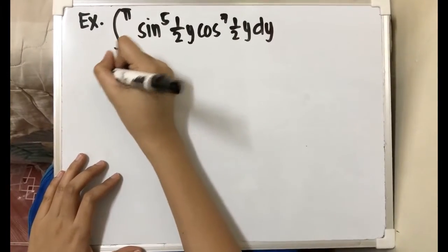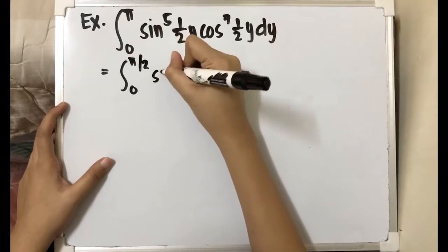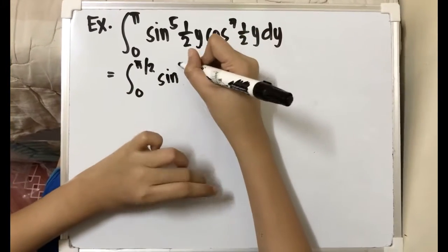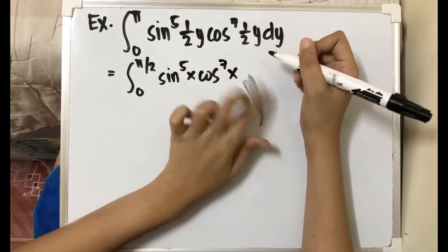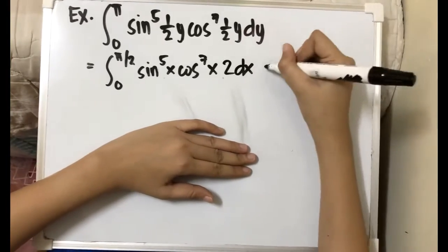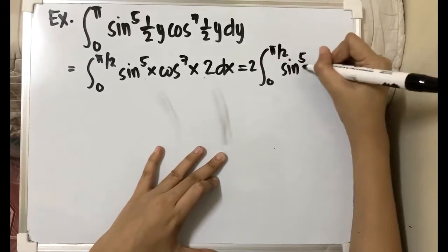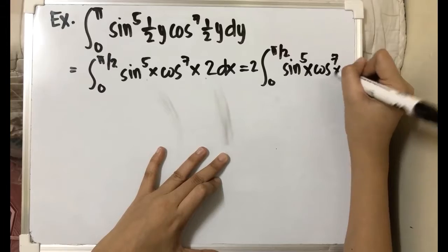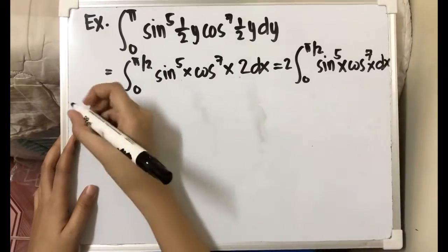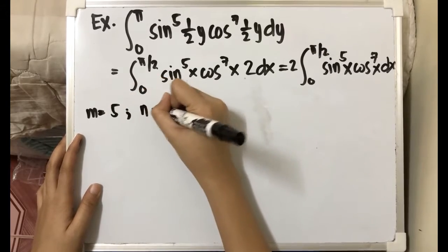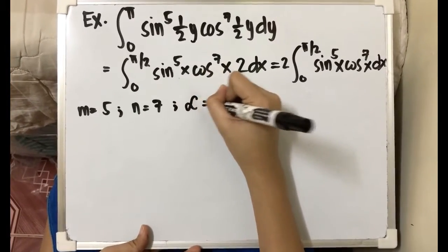Since we've solved for our new limits and integrand, this is now equivalent to the integral from 0 to pi over 2 of sine raised to 5x times cosine raised to 7x, with dy replaced by 2 dx. This is also equivalent to 2 times the integral from 0 to pi over 2 of sine raised to 5x times cosine raised to 7x dx. So m equals 5 and n equals 7. Since 5 and 7 are not even integers, lambda is still equal to 1.